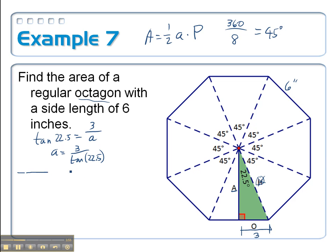Now let's just put it all together in our formula. Area should be equal to one-half the apothem, 3 over tangent 22.5, times the perimeter. One side is 6. We have 8 of them total. So 6 times 8 is 48.